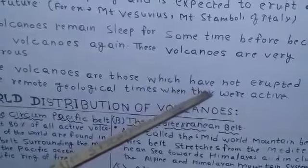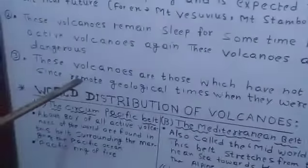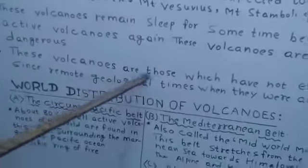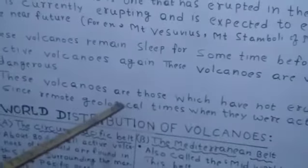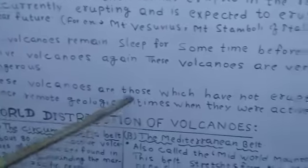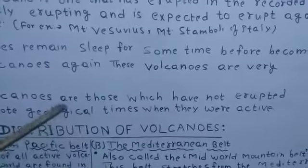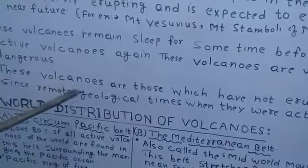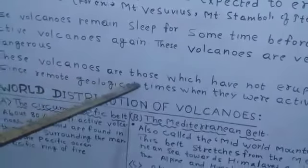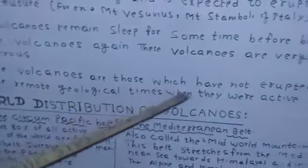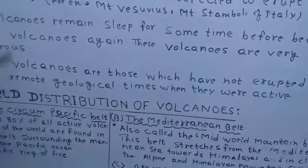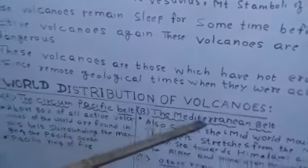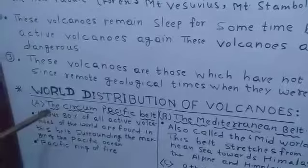The third type is extinct volcanoes. These are volcanoes which have not erupted since remote geological time when they were active. There is no chance of eruption in these volcanoes. They develop in the form of beautiful lakes, and these sites are very beautiful — one can visit them.